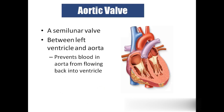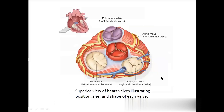The aortic valve is also a semilunar valve, which looks like a half-moon shape. It is present at the entry of the aorta and prevents blood from flowing from the aorta back to the left ventricle — to prevent this backward flow. So these are the valves.